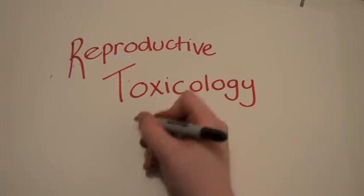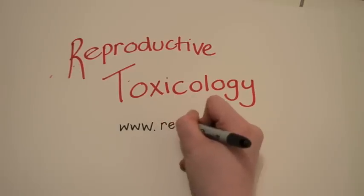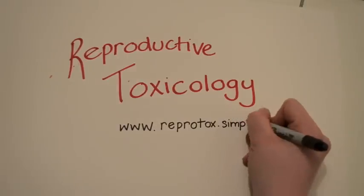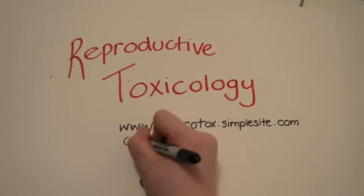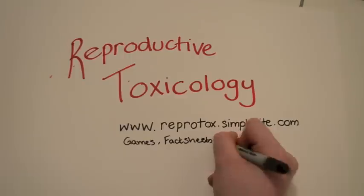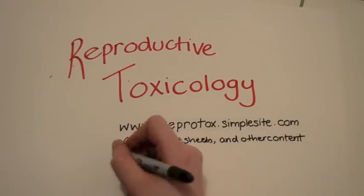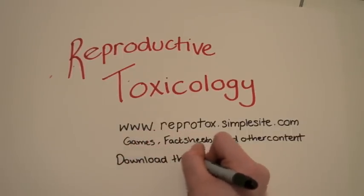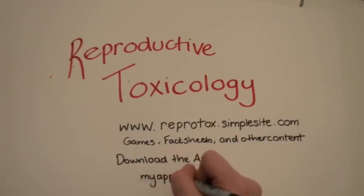We're just going to start by giving an overview of the reproductive system. You can visit our website at www.reprotox.simplesite.com. There's a few different resources on the website to help you understand reproductive toxicology. All this information is available on an app that you can download as well. The links to these can be found in the description bar below.